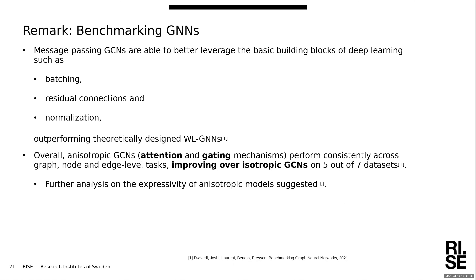A benchmark paper originating from this work compared different GNNs using a fixed compute budget across datasets ranging from MNIST image classification to citation networks and Reddit networks. Their finding: anisotropic GCNs — particularly those with attention or gating — significantly improve performance over isotropic GCNs. It seems it's always a good idea to treat neighborhood activations differently. Further analysis is needed for more advanced graph neural networks.